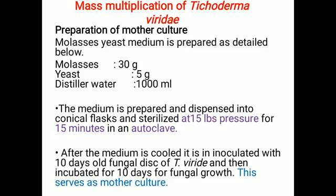The first step for mass multiplication of Trichoderma viridi fungus is the preparation of mother culture. A number of media are available on which we grow Trichoderma viridi. One such medium for mass multiplication is molasses yeast medium. To prepare it: take molasses 30 grams, yeast 5 grams, and distilled water 1000 ml — mix them together and the medium is ready.